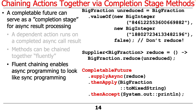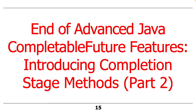This approach also avoids some of the nasty problems we discussed earlier having to do with callback hell. Having these dependent actions that are triggered avoids the problems with callback hell and deeply nested asynchronous exception processing. That's the end of part one of this particular example.